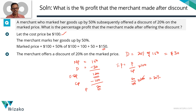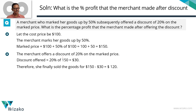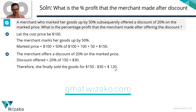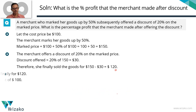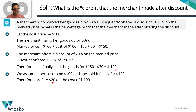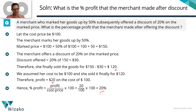The advantage of assuming cost price to be 100 is that the moment you compute the profit to be $20, you know the percentage profit is 20%. To quickly recap: discount is 20% of $150 mark price, so $30 discount; net selling price is $150 minus $30 equals $120; cost price assumed is $100; profit is $20; percentage profit equals 20%. Choice D is the correct answer.